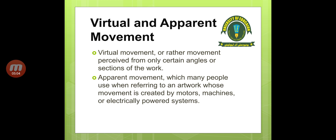Virtual and apparent movement are two styles of kinetic art. Virtual movement is perceived only at certain angles or sections of the work — you can feel the movement depending on the viewpoint or angle from which the work is observed.